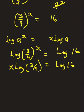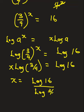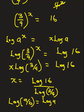So that means x is going to be log 16 all divided by log 3 over 4. Now I also want you to know that when you have log of a over b, this is going to give us log a minus log b.